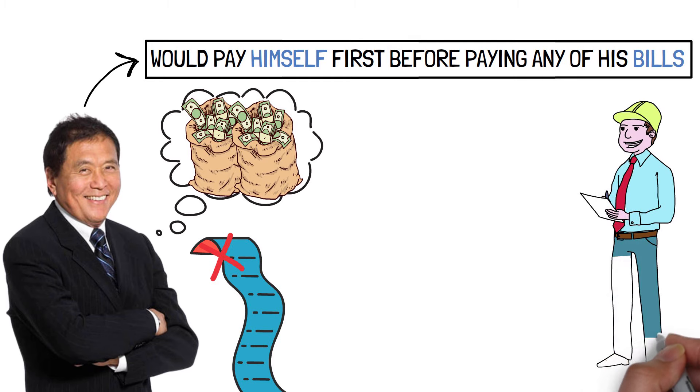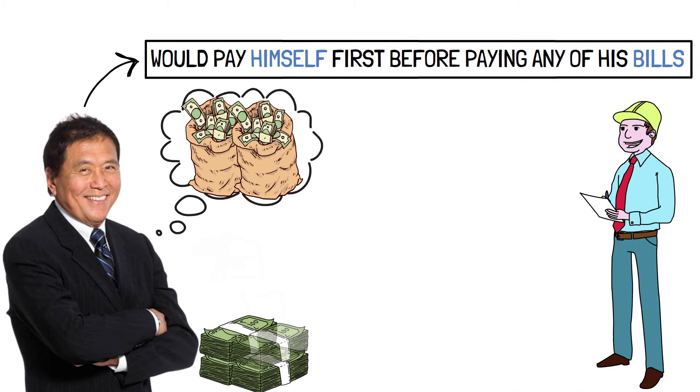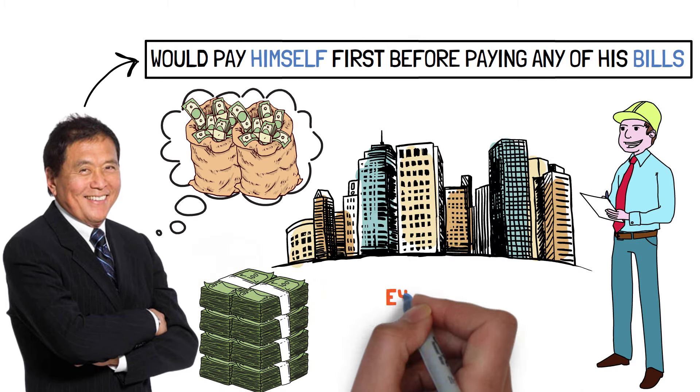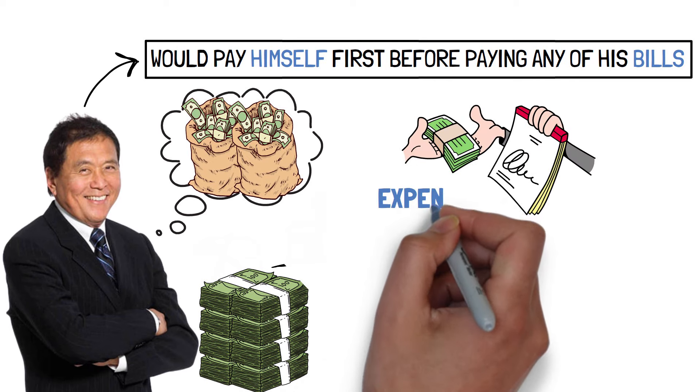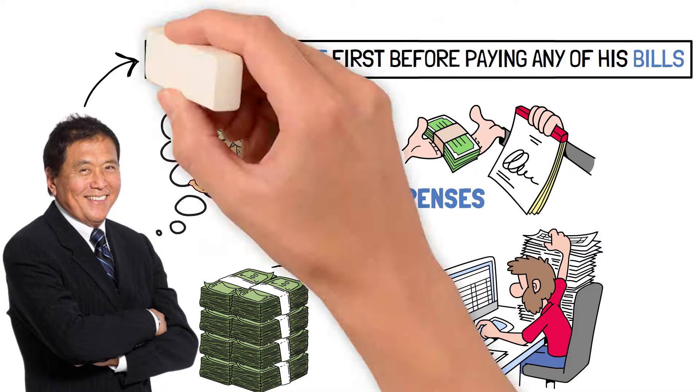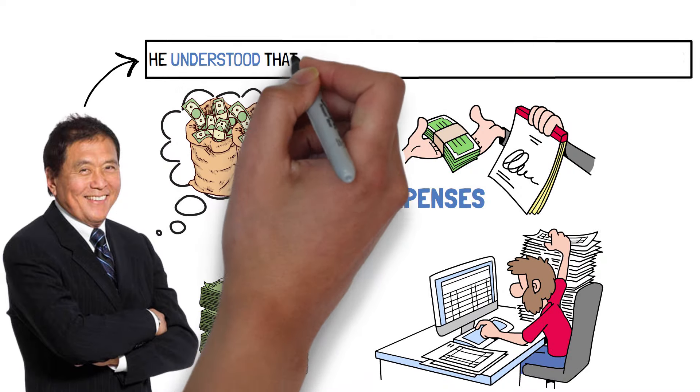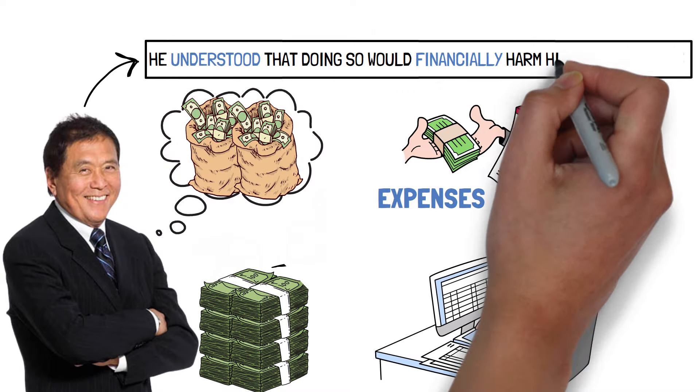When bill collectors came after him, he saw it as motivation to increase his income through enterprises or real estate investments. The easy way to pay expenses in the short term would be to acquire a job like everyone else, but he understood that doing so would financially harm him in the long run.